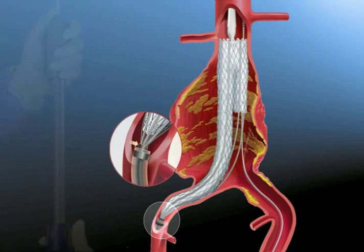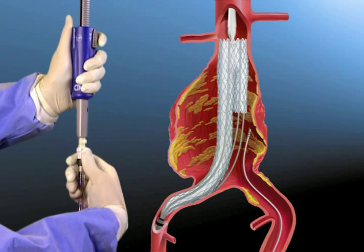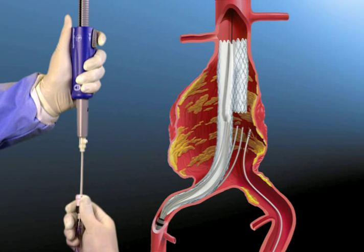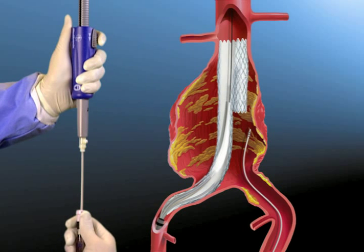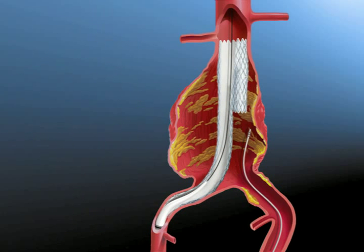To remove the delivery system, depress the quick disconnect button to retract the tapered tip and runners. Use continuous fluoroscopy and watch the top of the AneuRx stent graft while slowly pulling back the runners and tapered tip into the graft cover of the Accelerant Delivery System.